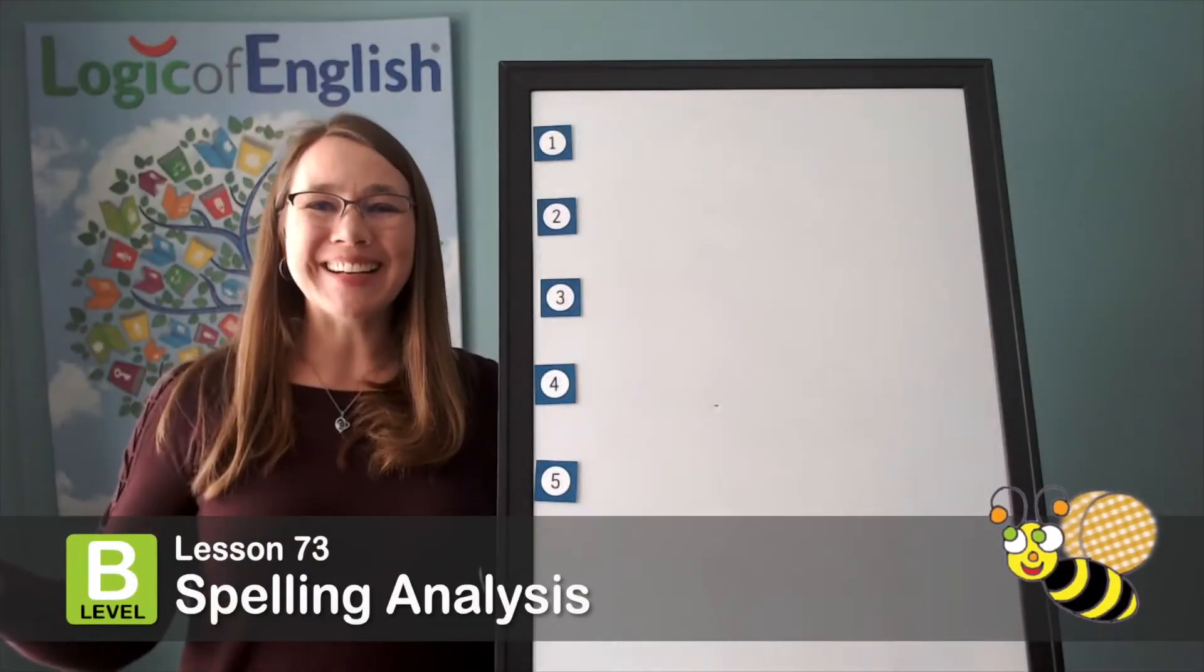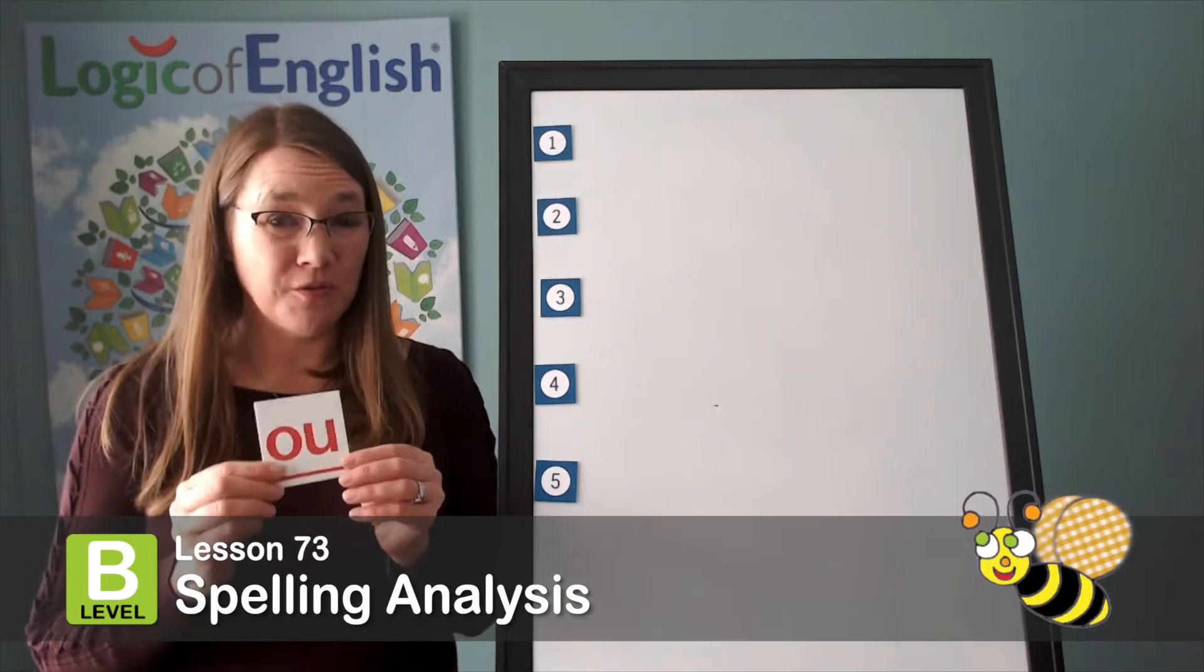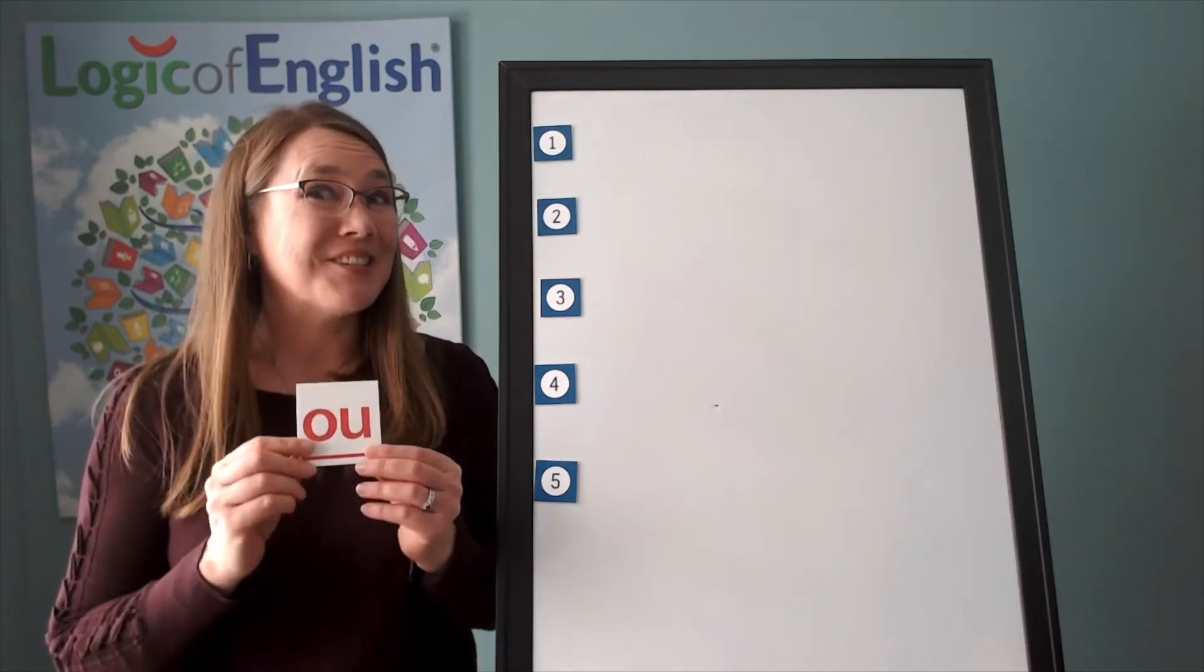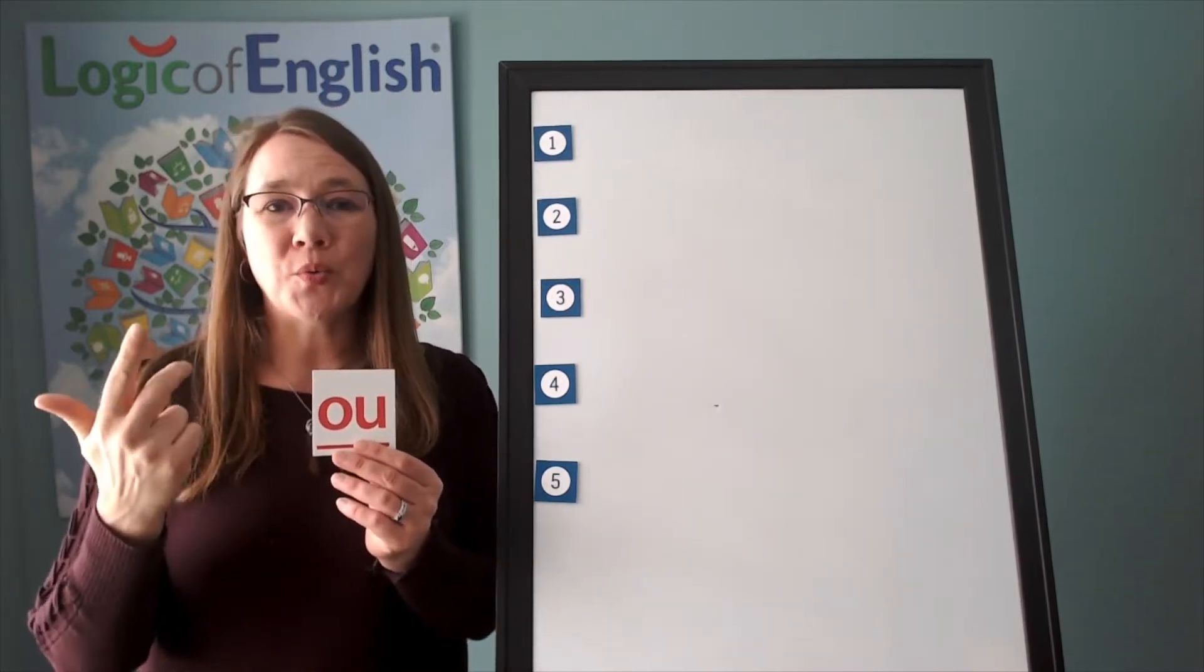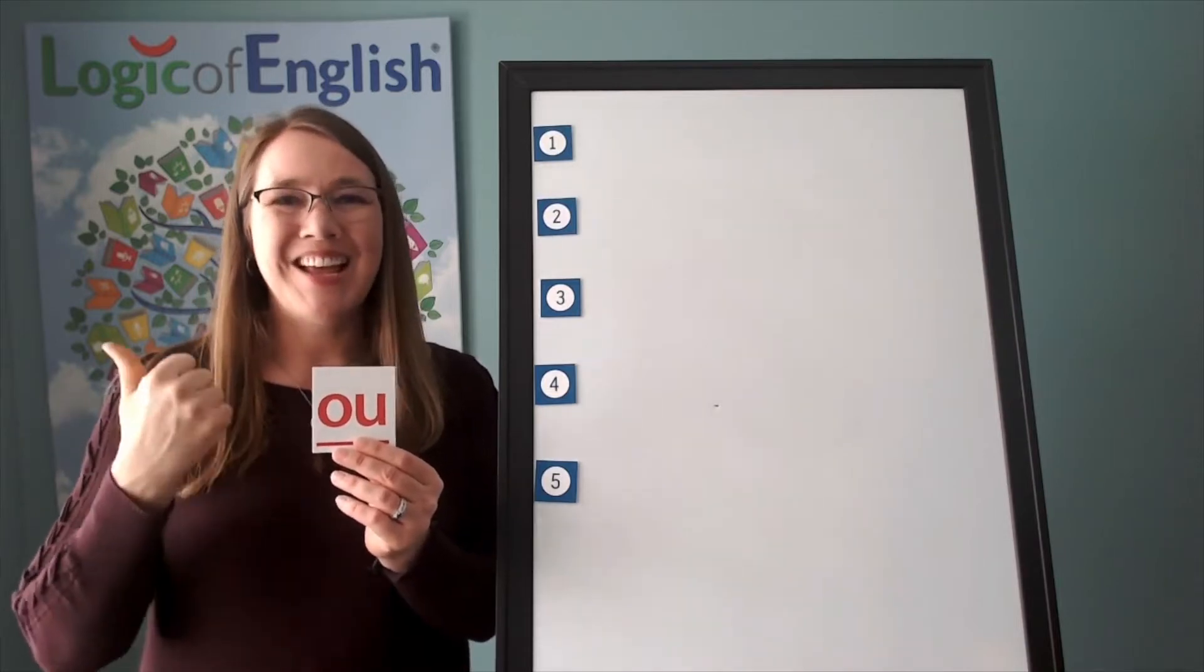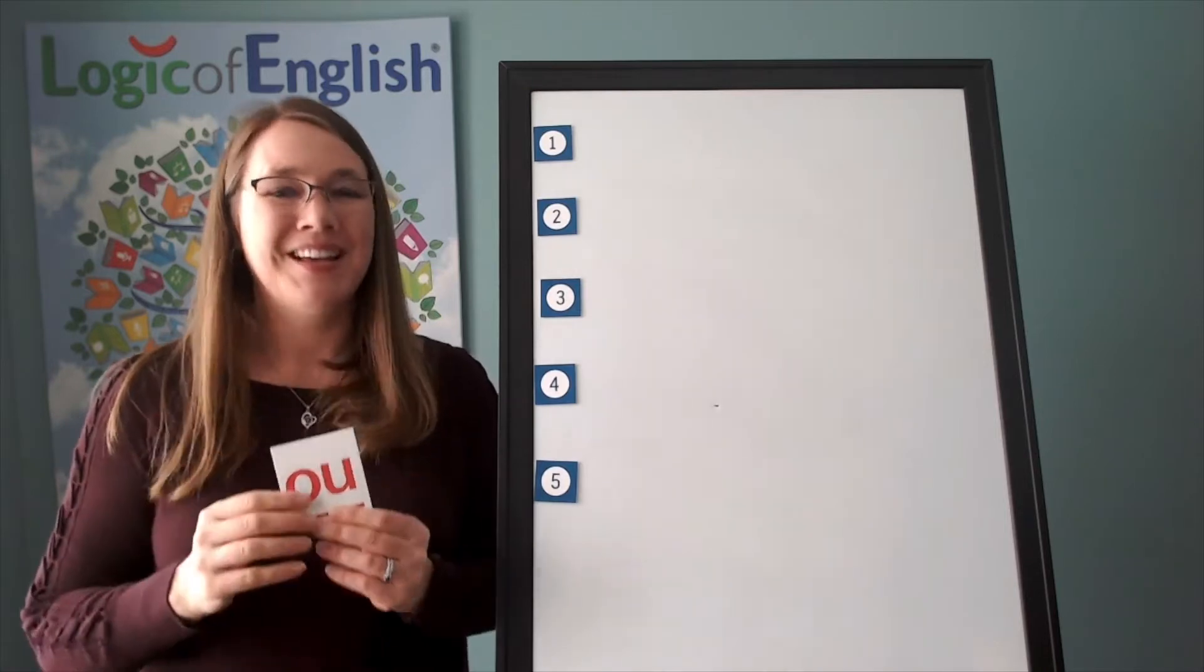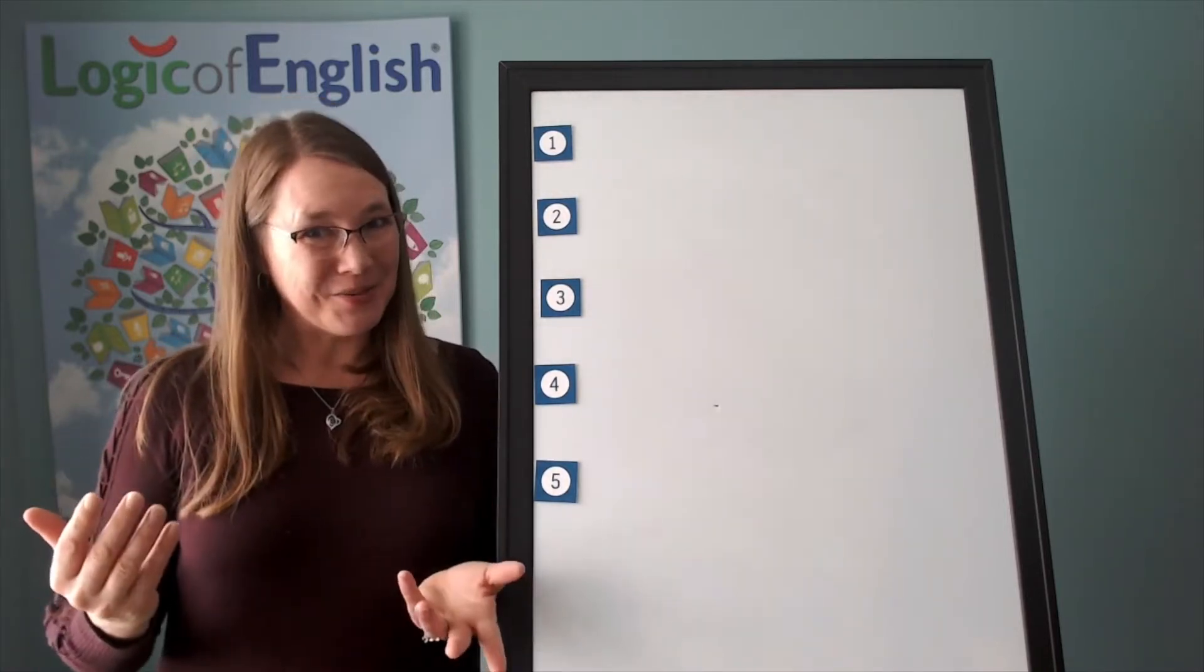Welcome to spelling analysis. Today we will be using our new phonogram. Now this has a lot of sounds, doesn't it? It has five. Let's say them together. Ow, o, oo, uh, uh. Got it? Ow, o, oo, uh, uh. Alright, let's try it again. Or actually let's apply it to our spelling.